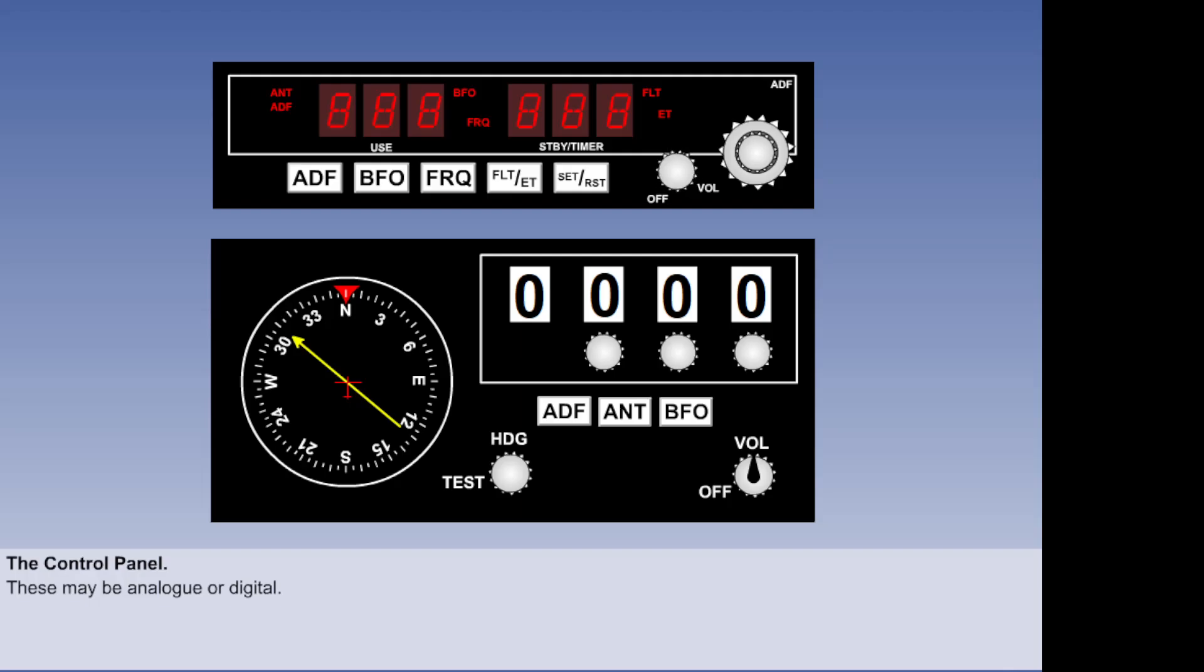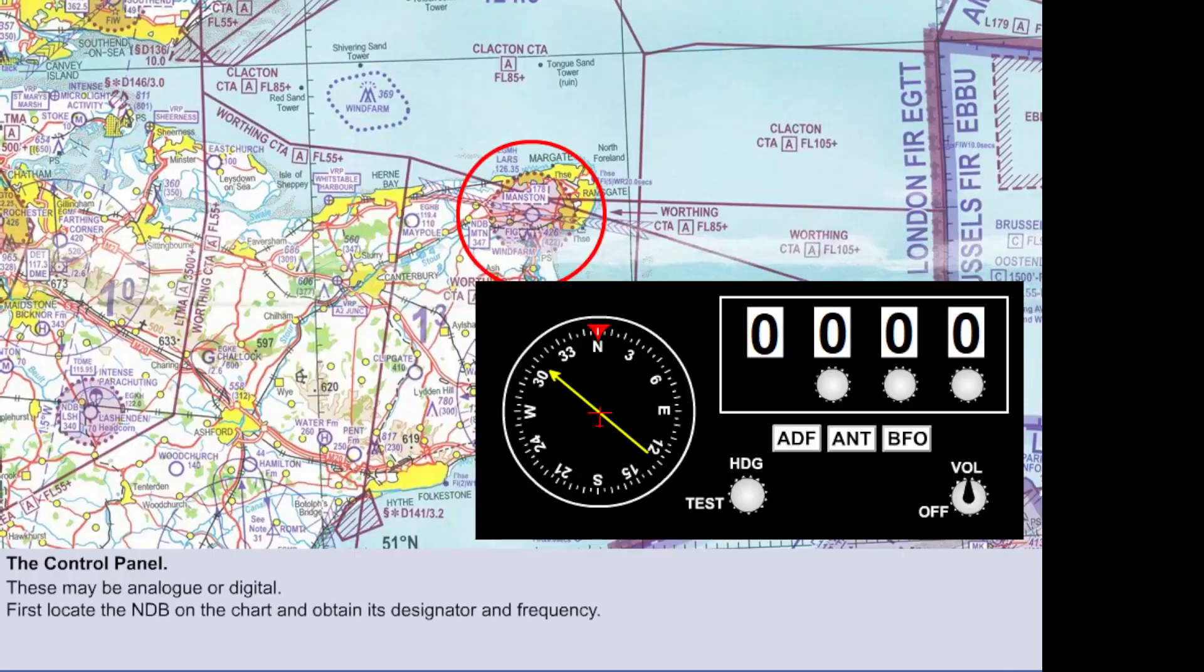Here, we see two modern ADF control panels made by Bendix King. The one without the dial is digital, but they both operate in the same way. The first thing to do when planning to use an ADF is to find its location, its designator, and its frequency, all of which can be found from aviation charts.